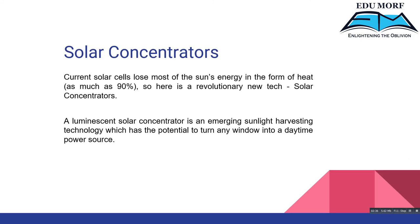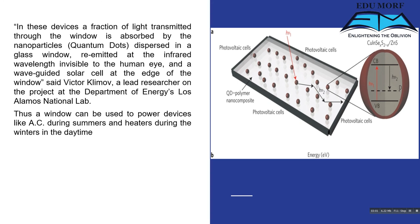Now for the main topic: solar concentrators. Current solar cells lose most of the Sun's energy in the form of heat — as much as 90%. A solar concentrator is an emerging sunlight harvesting technology with the potential to turn any window into a daytime power source. In these devices, a fraction of light transmitted by the window is absorbed by nanoparticles — that is, quantum dots — dispersed in a glass window.